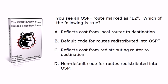Alright, let's go back through the questions. When you see an OSPF route marked as E2, it does not reflect the cost from the local router to the destination. What it actually does is reflect the cost from the redistributing router to the destination, and it is the default code for routes redistributed into OSPF. I'm going to do a YouTube video on that and show you the differences on a live router very shortly. The right answers here are B and C.